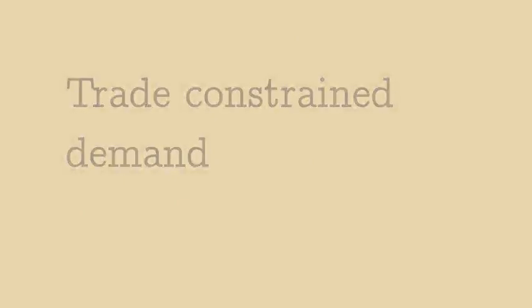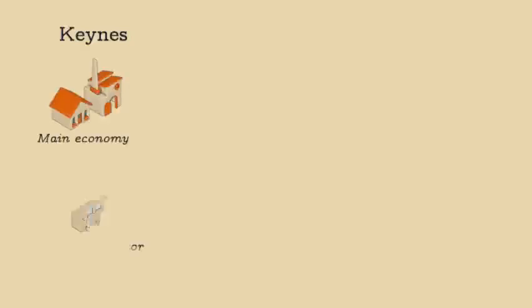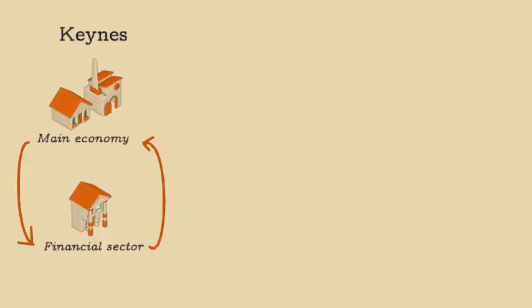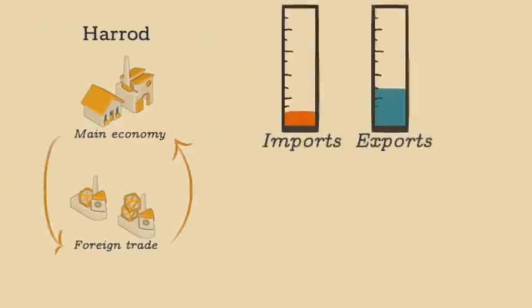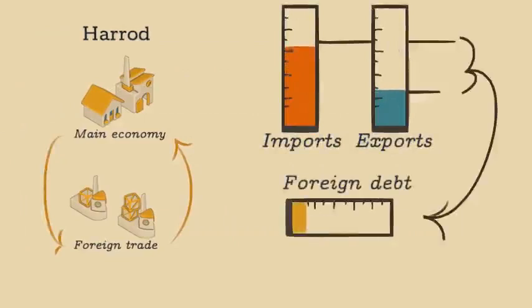The second theoretical foundation concerns trade-constrained demand. Keynes developed his theory for a closed economy, and thus the major constraint to demand was provided by the financial sector. However, Harrod began to develop a theory showing how maintaining balance of trade may create a more severe limitation to demand. Here, we assume that countries cannot indefinitely import more in monetary value than they export, because this would increase foreign debt, as domestic households, firms, or government borrowed foreign money to finance the excess of imports not paid for by exports. Although the exact level of the debt ceiling countries may face is not well understood, it is generally accepted that some such ceiling exists.